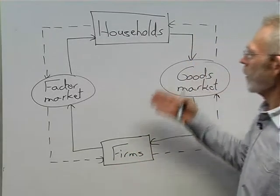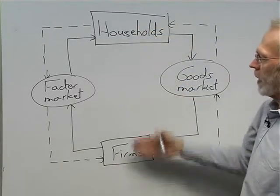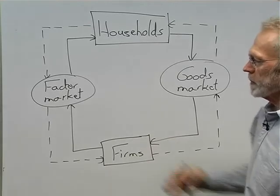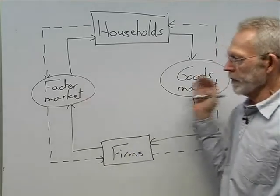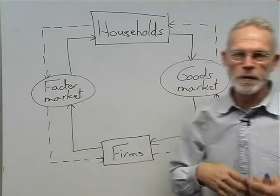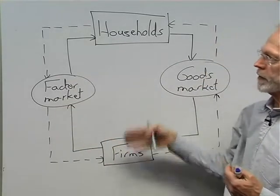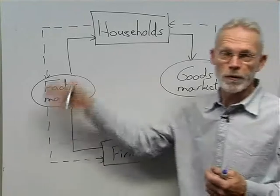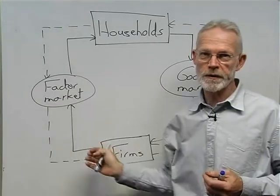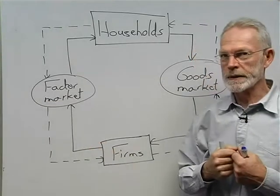We have the model of our economy showing households and firms, the factor market and goods market, and also the different flows — real and nominal — between households and firms.